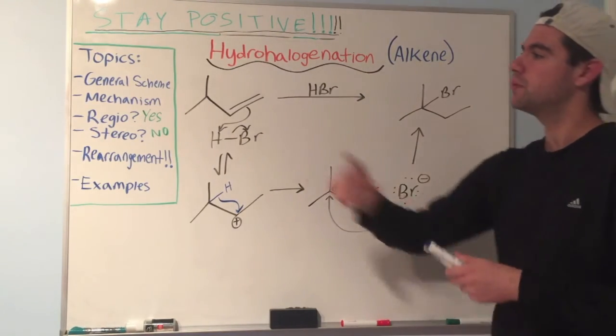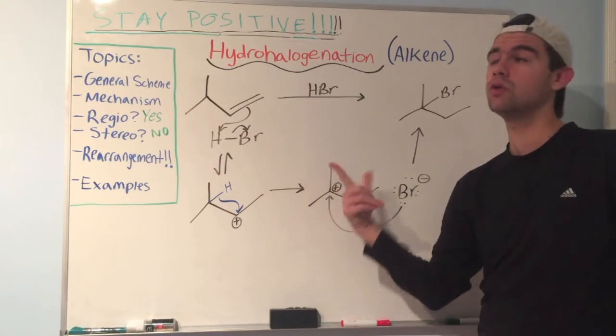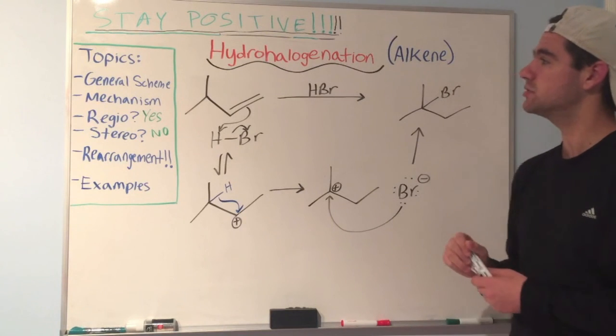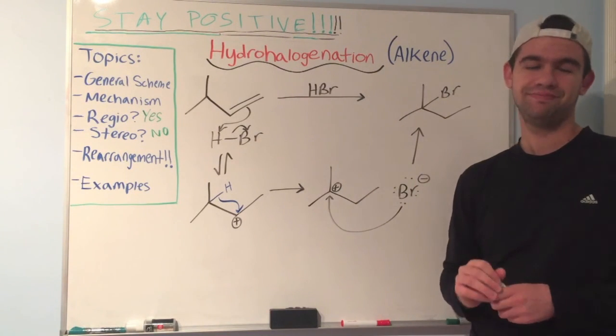So in summary, regiospecific, yes, follows Markovnikov's rule. Stereospecific, no, because you get a racemic mixture. I hope these examples were helpful, and I hope this made hydrohalogenation clear. Thanks for watching.